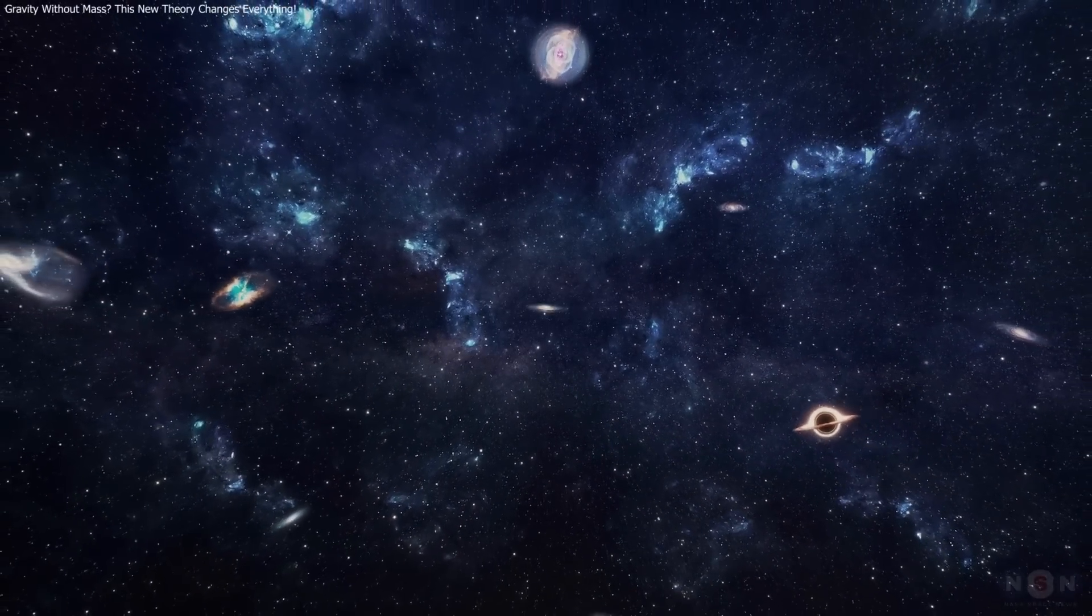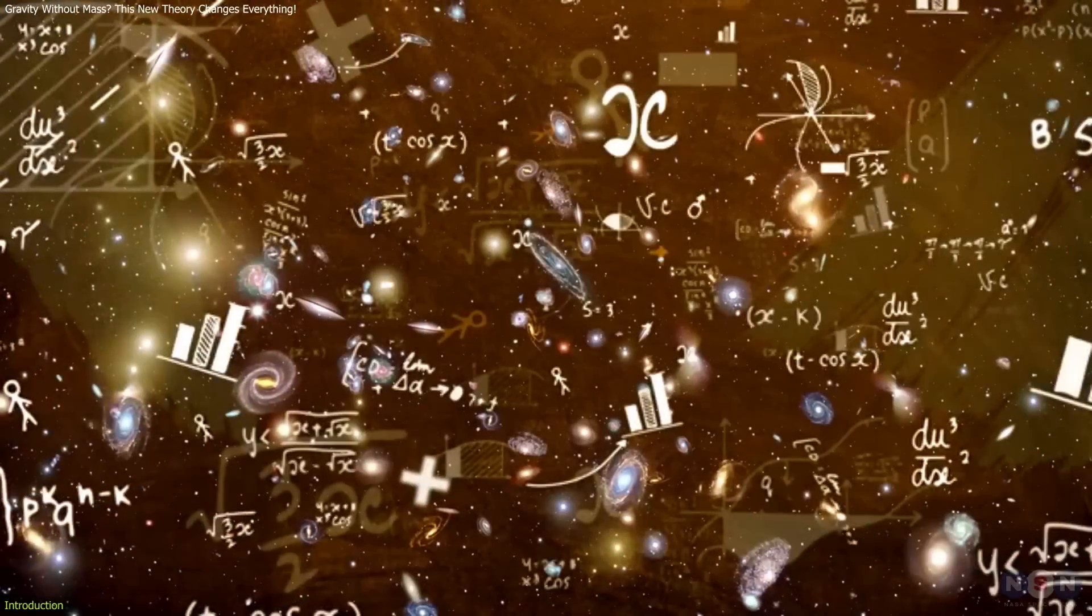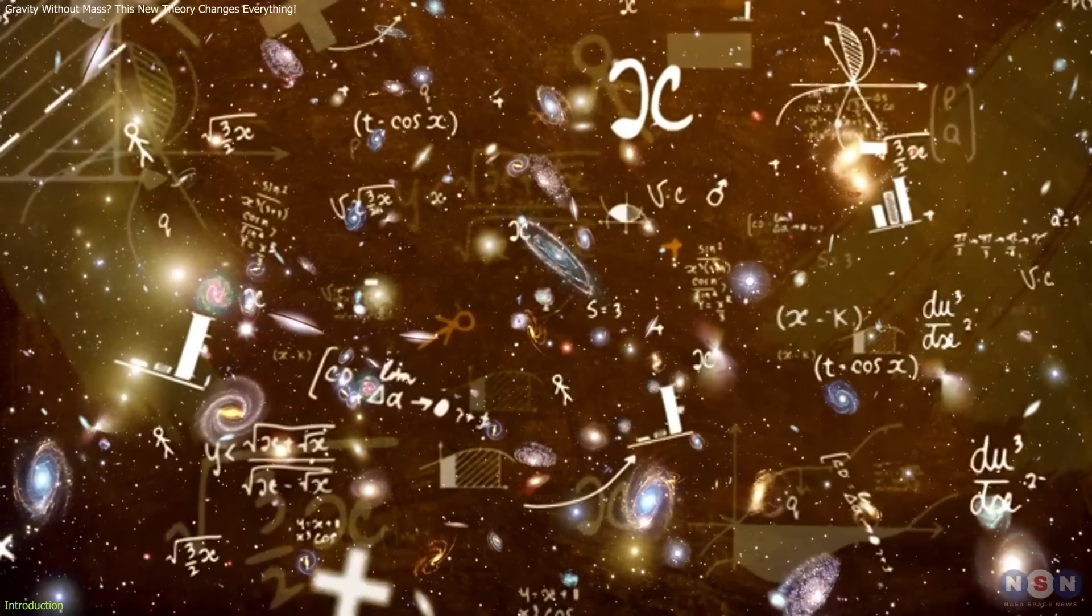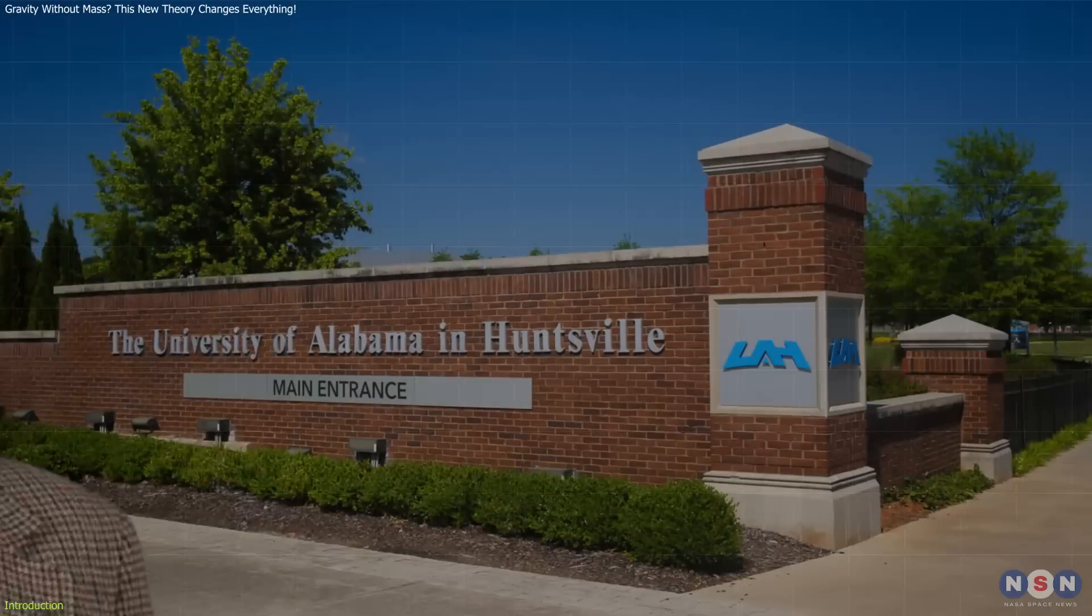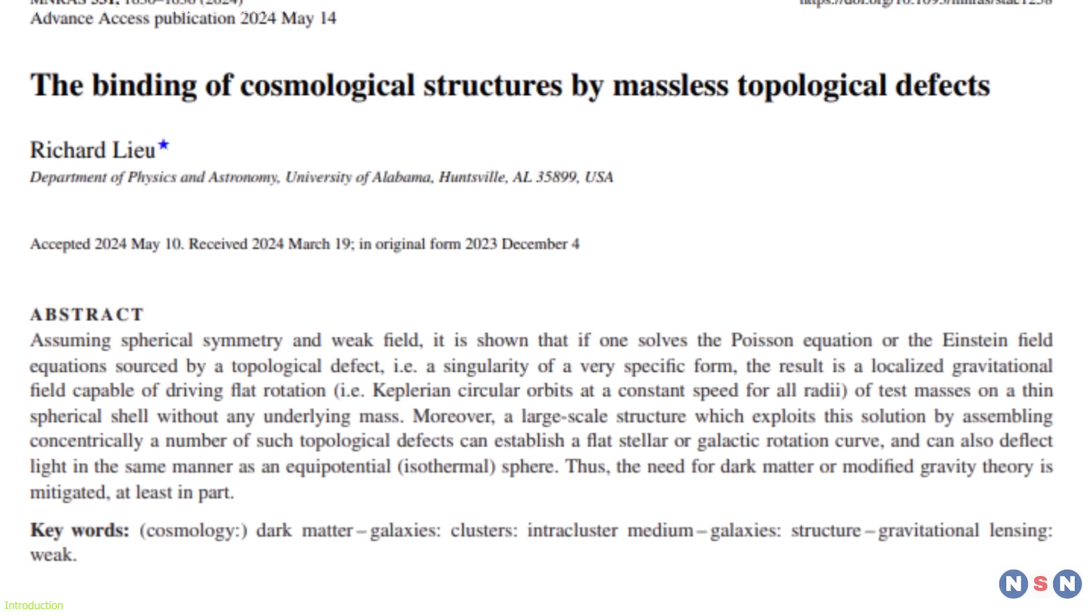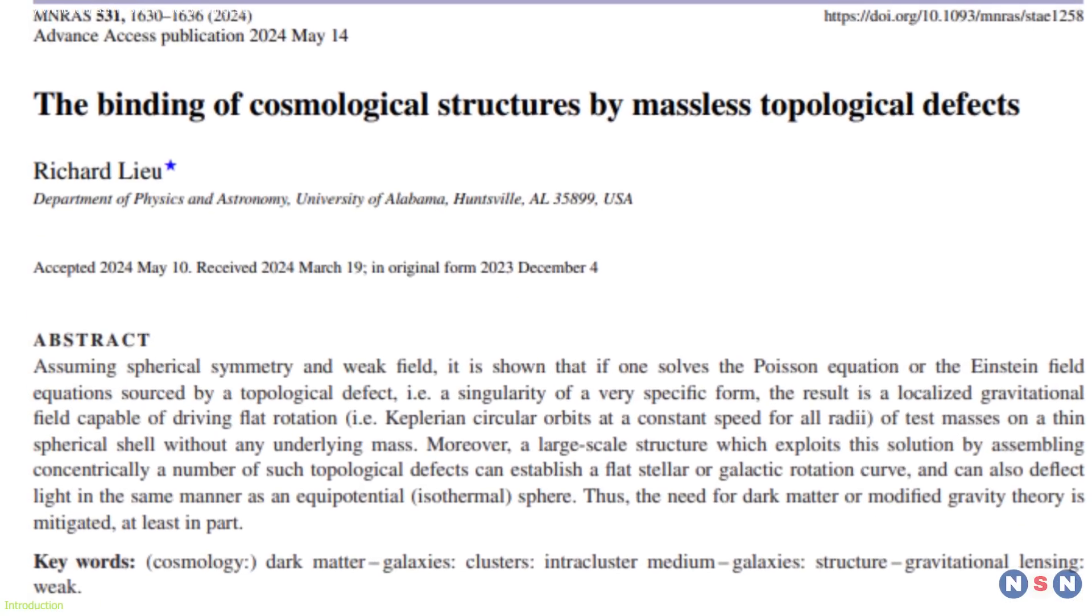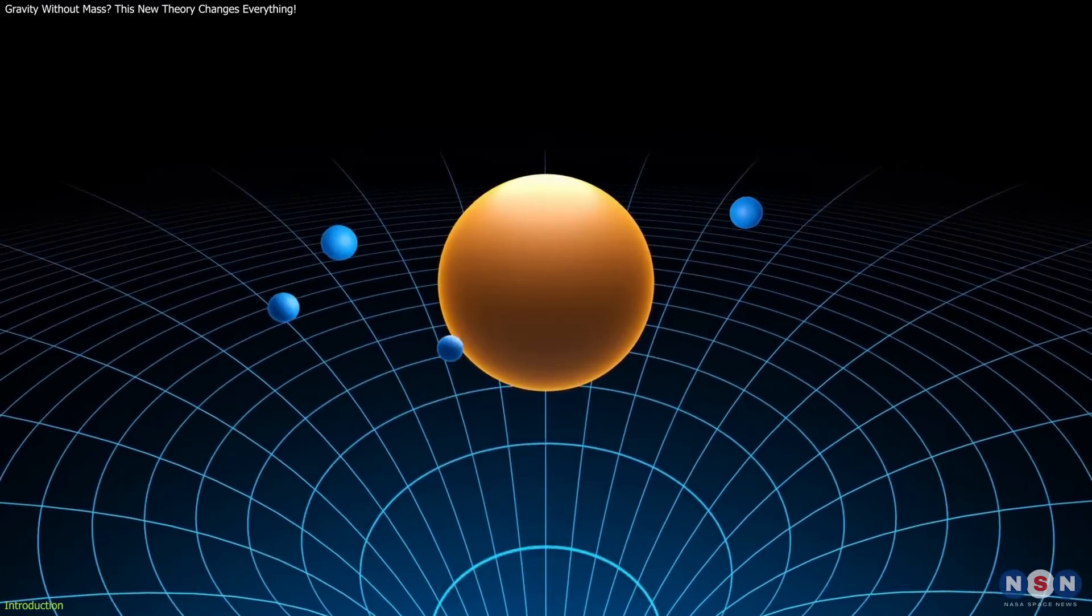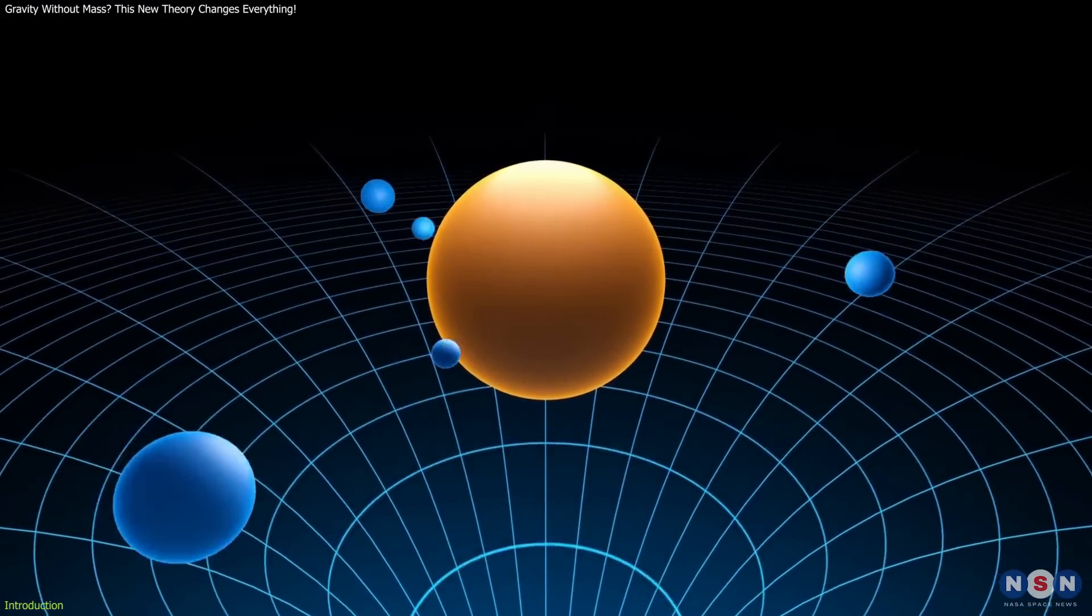Imagine a universe where gravity doesn't depend on mass, a concept that challenges our core understanding of physics. Dr. Richard Liu, a professor of physics and astronomy at the University of Alabama in Huntsville, has introduced a groundbreaking theory suggesting that gravity could exist without mass, potentially explaining certain gravitational effects without needing dark matter.